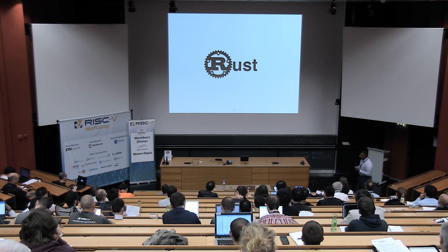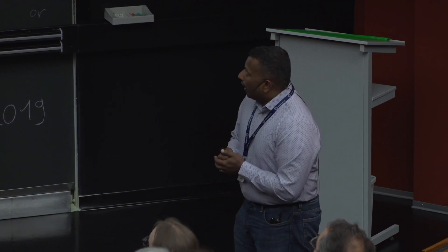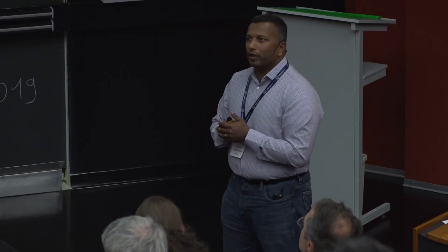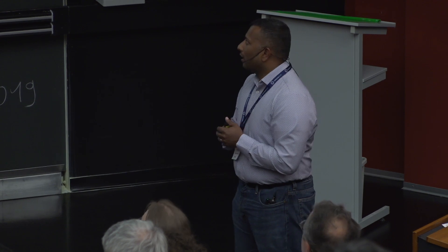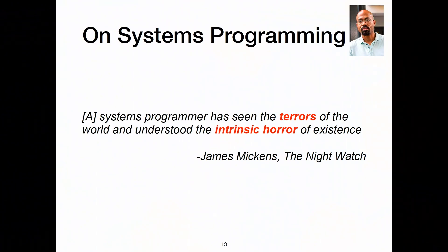So why is Rust interesting from a security perspective? I'll start talking about systems programming. This is a quote from James Mickens — he's a professor at Harvard, used to be a researcher at Microsoft. It says: 'A systems programmer has seen the terrors of the world and understood the intrinsic horror of existence.' I think this is true. You see some gnarly stuff when you're doing systems programming, working in kernel code and low-level systems. I recommend the whole article — it's hilarious.